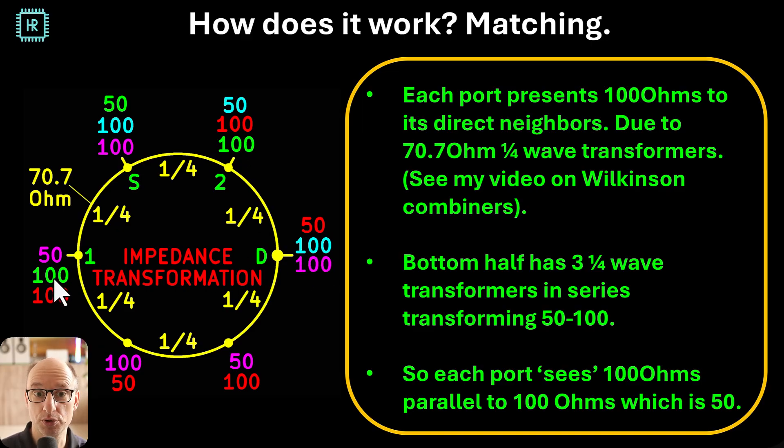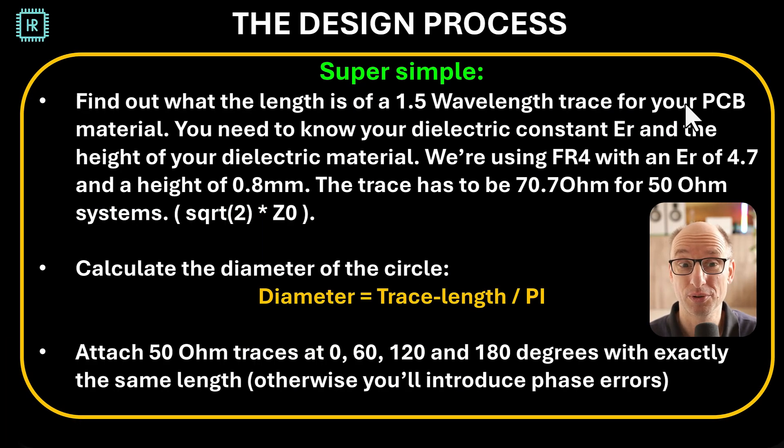Now what you see that you end up with is that each port ends up with two 100 ohm loads, which in parallel make 50 ohms. You get perfect matching. Now on the bottom ring you see multiple transformers, so you see 50 that's transformed to 100, and a quarter wave transformer transforms it back to 50 again, and then transforms it up to 100 again. So there you see three transformations, but the net result is the same: 50 ohms turns into 100 ohms at the neighbor. So that's how you get each port to perfectly see 50 ohms.